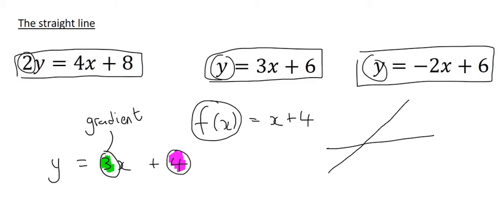Then this number here is what we call the y-intercept. So mathematically what that means is if you have a straight line drawn on an x and a y graph, it's the point where it cuts this y-axis.